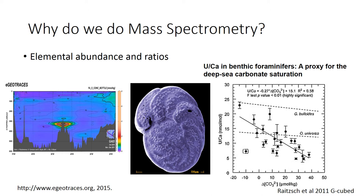We can use mass spectrometry to tell us the concentration of different chemicals in geological or environmental samples, or we can use them to measure the ratios of different elements. For instance, we might want to measure the concentration of iron in an oceanographic section measured in seawater, or measure the concentration of uranium to calcium in a benthic foraminifera. We can use element ratios such as uranium-calcium as a proxy for carbonate ion saturation state — it tells us something about the environment. The key thing is that mass spectrometry can measure the amount or the ratios of different elements in a sample.